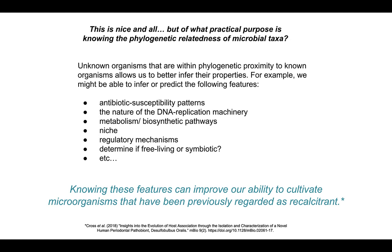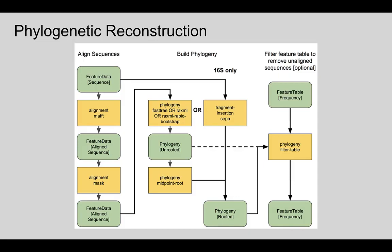Hopefully that was a nice history lesson on phylogenetics and sequencing and how it's evolved over time. Now, in QIIME 2 we offer a couple of ways of building and constructing phylogenies. One is a de novo approach — we take the data itself, generate an alignment, and build the tree from that alignment. Another approach is to take a well-curated reference tree and alignment and insert your sequences into that tree. This is very helpful when generating short sequences, as is commonly done with amplicon sequencing, to extract as much phylogenetic information as possible.